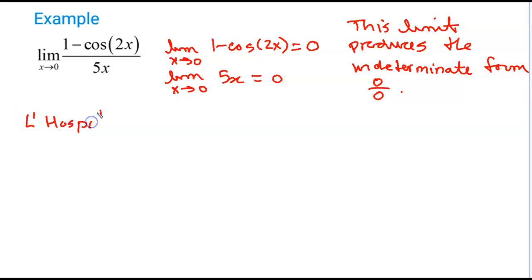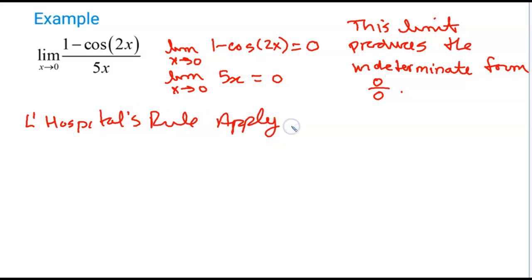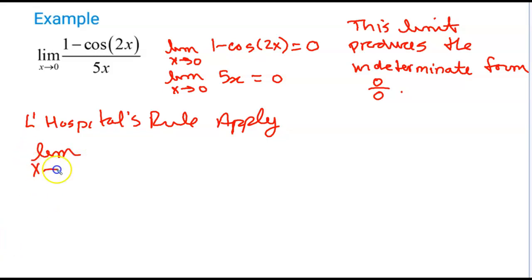Therefore, L'Hôpital's rule will apply. I've shown that this limit is a candidate for L'Hôpital's rule. It's the same limit as x approaches 0. Now I take the derivative of the top. The derivative of 1 is 0. The derivative of negative cos is — the derivative of cos is negative sine, so negative times negative sine is going to be sine(2x) times the derivative of 2x, which is 2.